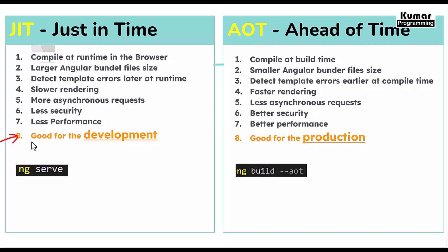JIT compiler is used for development and AOT is best for production. After Angular 9, a new render engine called the Ivy render engine was introduced. The issues of detecting template errors, slower rendering, and less performance were causing development to be more time-consuming, which is why Ivy was introduced in Angular 9. Before that they were using the View engine. I will make a separate video to differentiate between the Ivy and View render engines.